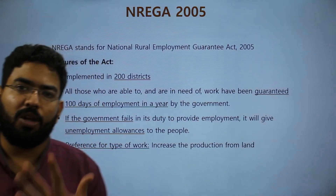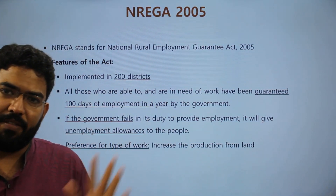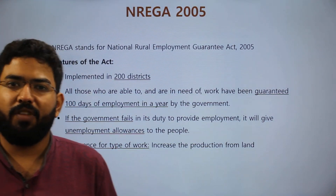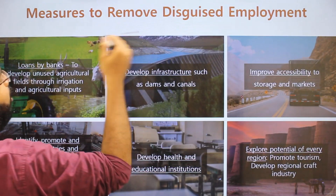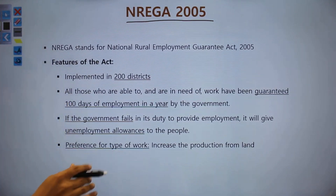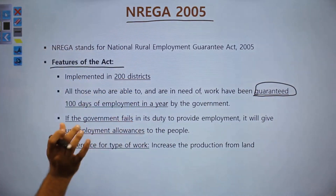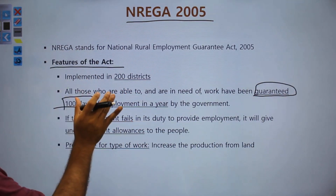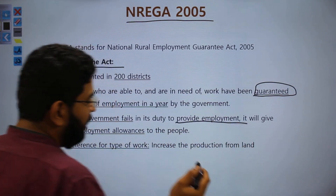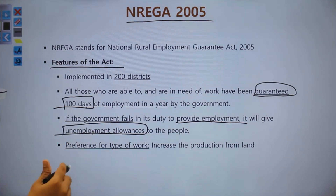The government also thought about these channels and came up with a short-term fix, since the long-term solutions require more time. The government introduced NREGA — the National Rural Employment Guarantee Act of 2005 — started by the Manmohan Singh government. Its key feature is that anyone who wants a job is guaranteed 100 days of employment. If the government cannot provide the job, it pays an unemployment allowance.